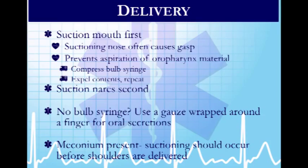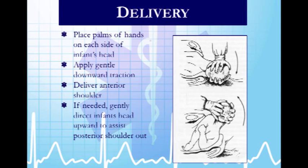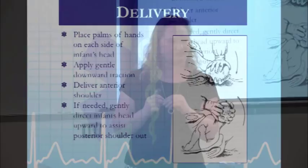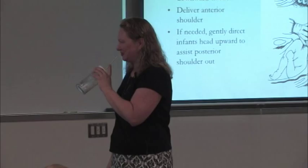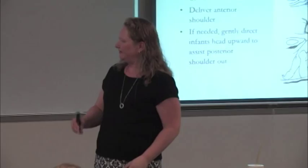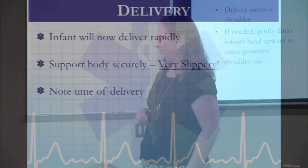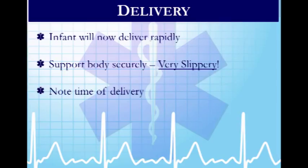If no bulb syringe is available, a gloved finger covered with gauze works as well. If meconium is present, suction sooner rather than later, because as soon as the baby takes first breaths they may aspirate the contents. Once the shoulders are clear, the infant will deliver quickly — support the body and catch it. Note the time of delivery.